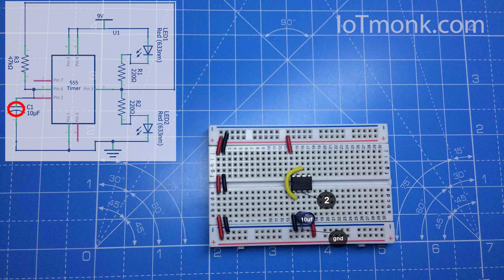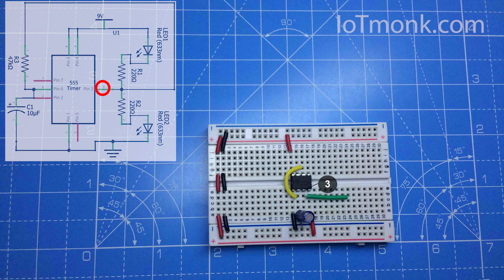Now place a 10 microfarad capacitor from pin number two such that the positive terminal of the 10 microfarad capacitor is connected to pin number two of the 555 timer IC and the ground terminal of the 10 microfarad capacitor to the ground terminal of the breadboard.